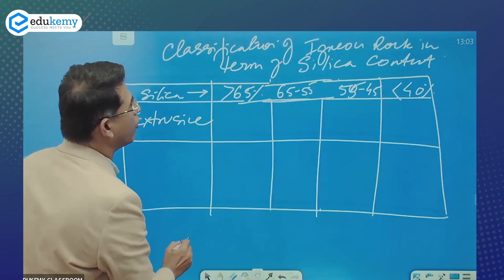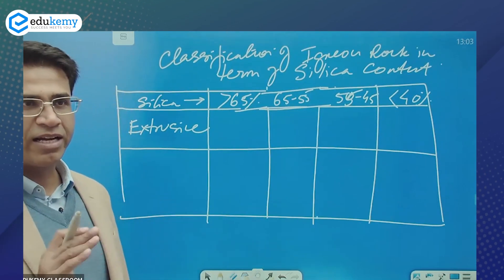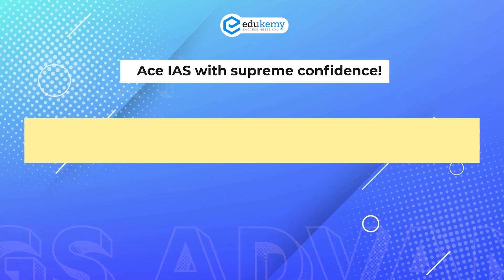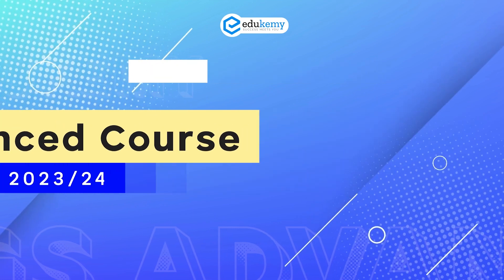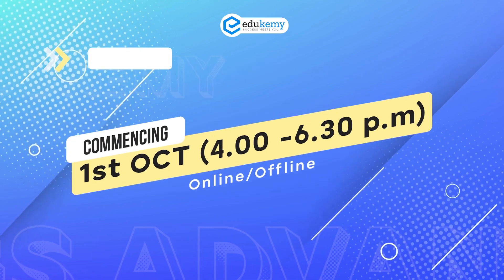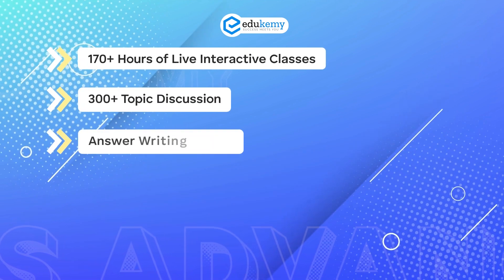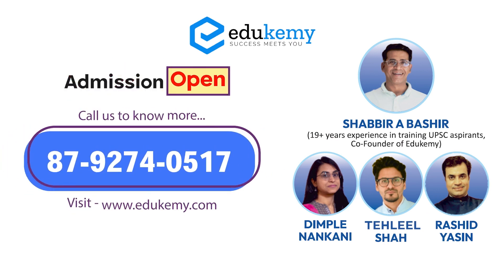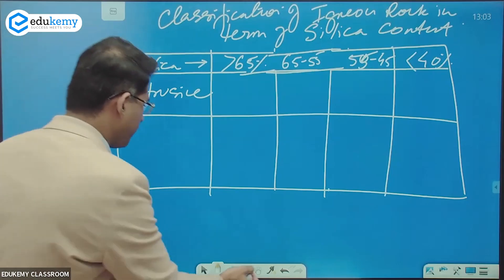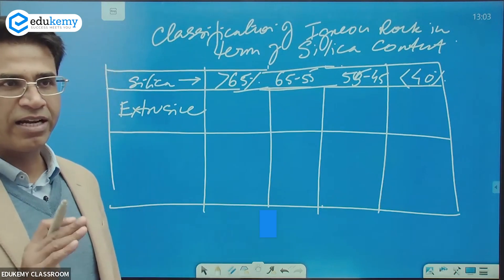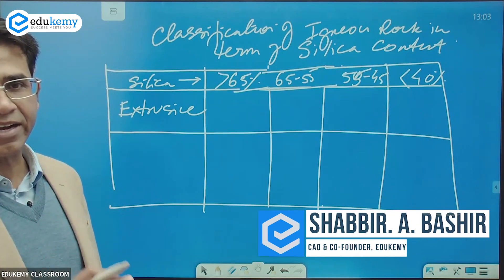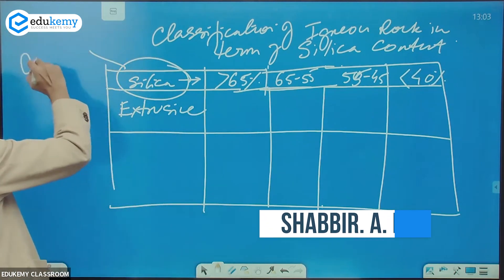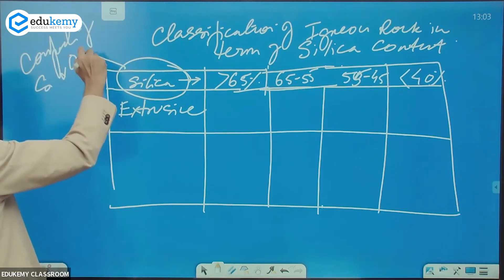This is a classification of igneous rocks in terms of silica content. What is silica? This is basically compounds of silicon and oxygen.